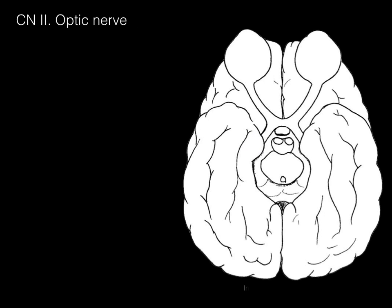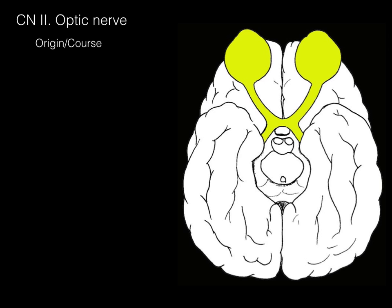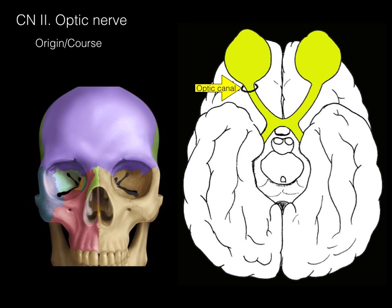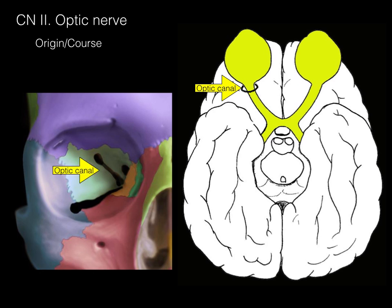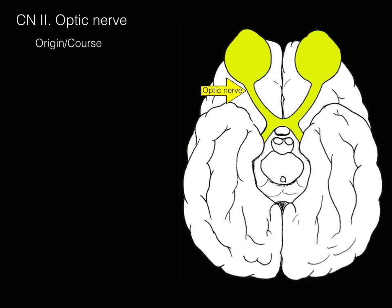The optic nerve: here we have an inferior surface view of the brain, with the yellowed area showing the origin and course. There's the eyeball, and the retina at the back becomes the optic nerve, which traverses an opening in the skull called the optic canal. Here's an anterior view of the skull with a close-up of the orbit — there's the optic canal, where the optic nerve passes from the orbit through into the cranial vault, coursing to the optic chiasm.